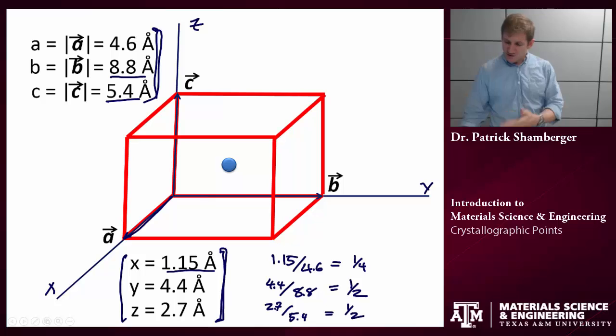The position of this particular atom would be 1 quarter, 1 half, 1 half. Conventionally not written with commas. And certainly with no brackets or parentheses. As these have other significance, as you'll see shortly.